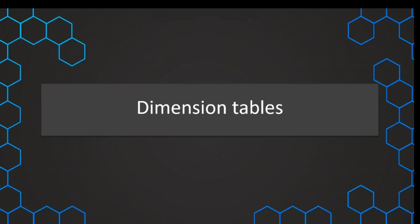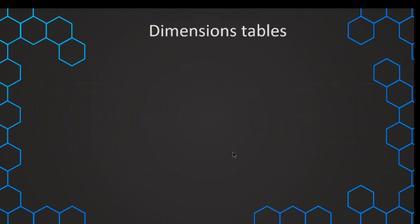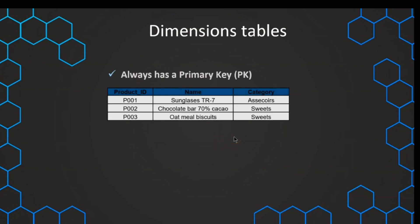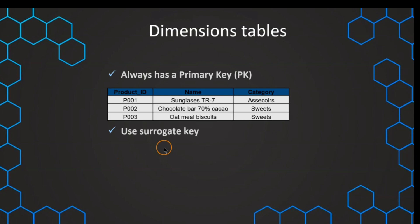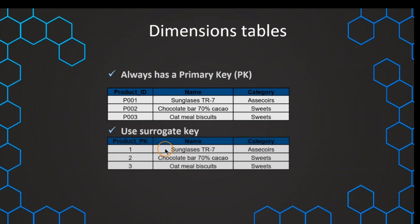In this section we want to talk about dimension tables. A dimension table is used to slice and dice our data. A dimension table always needs a primary key. We can see there is a natural key coming straight out of the source system, but this is not the best approach. We should rather replace those natural keys and use surrogate keys, which is usually an integer number that increases one by one.